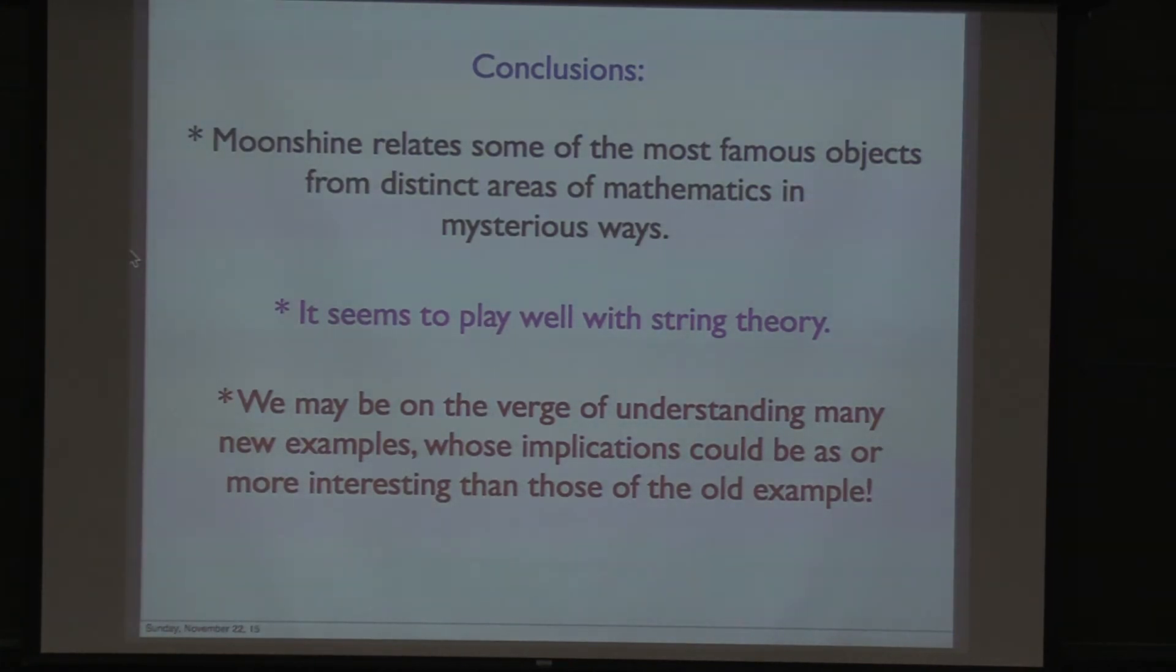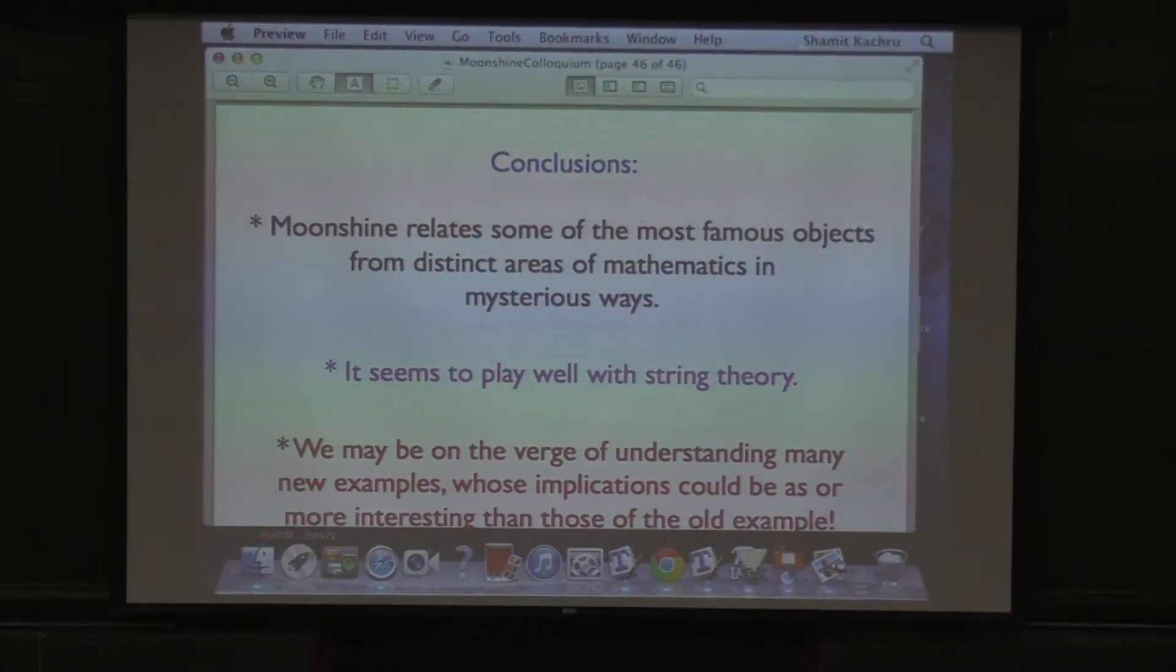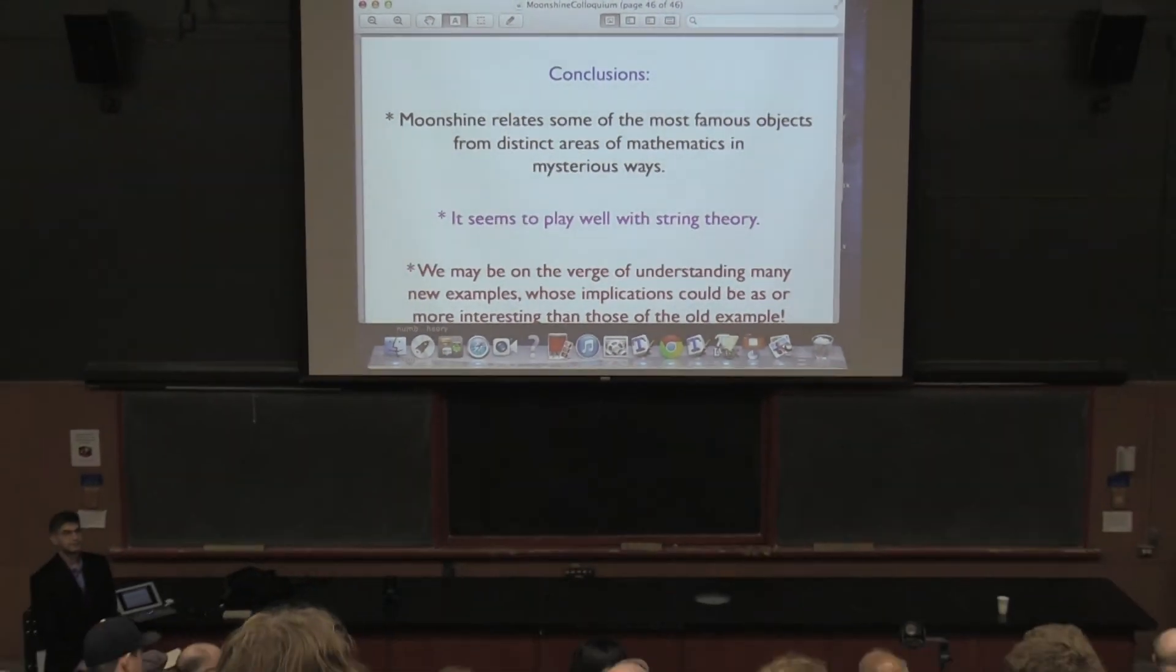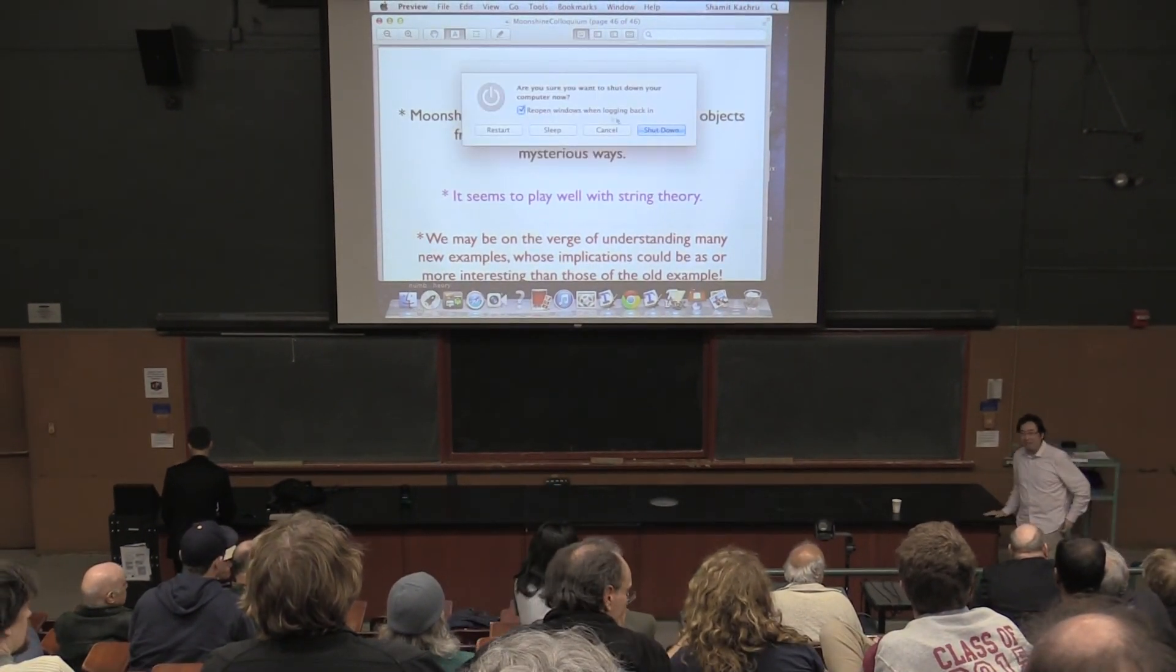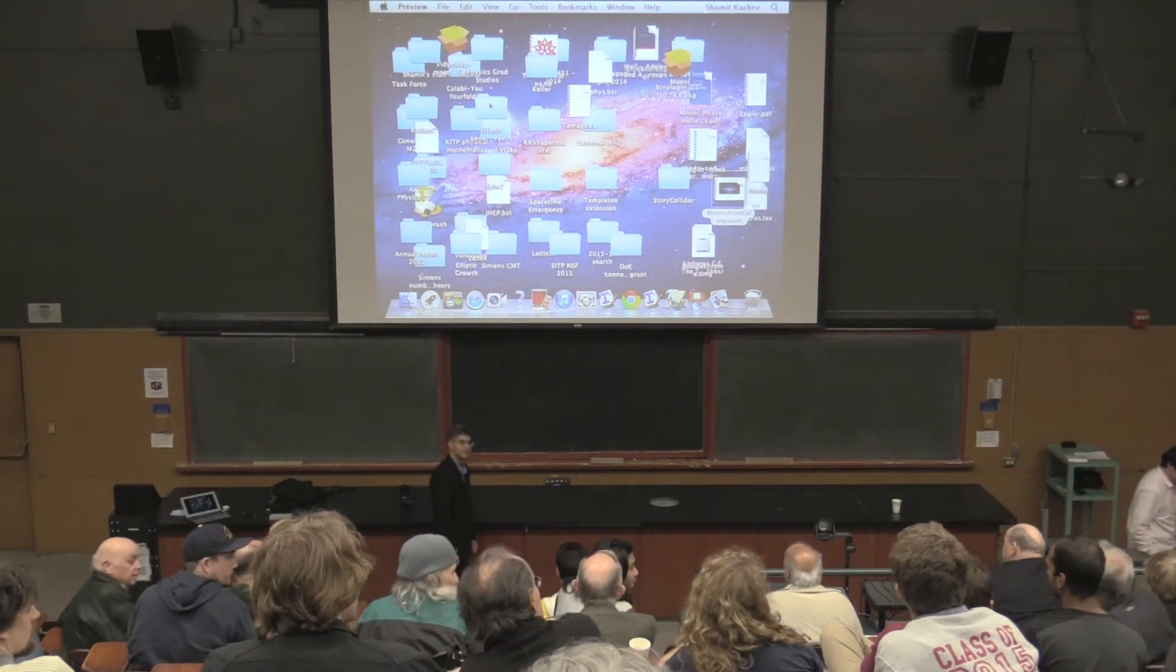So let me conclude. Here's what I hope you took from this talk. Moonshine relates some of the most famous objects from distinct areas of mathematics in ways that are still mysterious. This is not close to a finished subject. It seems to play well with string theory, and that's hopeful, because whatever math underlies string theory, we don't know it yet. And we may well be on the verge of understanding many new examples whose implications could be as or more interesting than those of the example of Borcherds. So thanks very much for your time.